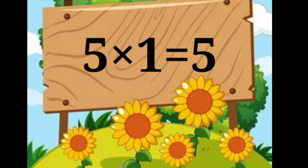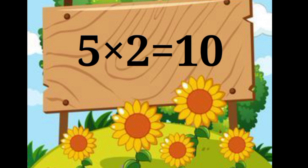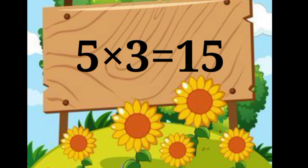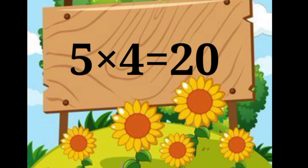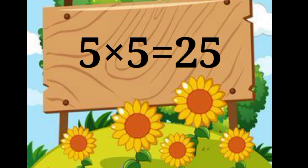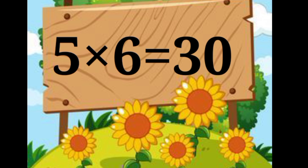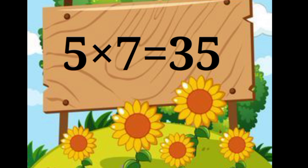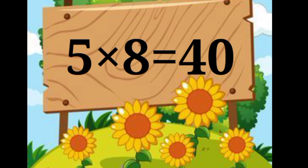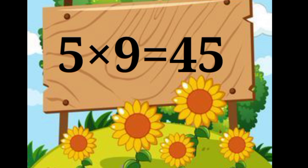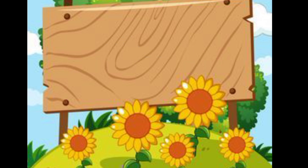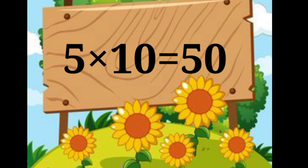5 ones are 5. 5 twos are 10. 5 threes are 15. 5 fours are 20. 5 fives are 25. 5 sixes are 30. 5 sevens are 35. 5 eights are 40. 5 nines are 45. 5 tens are 50.